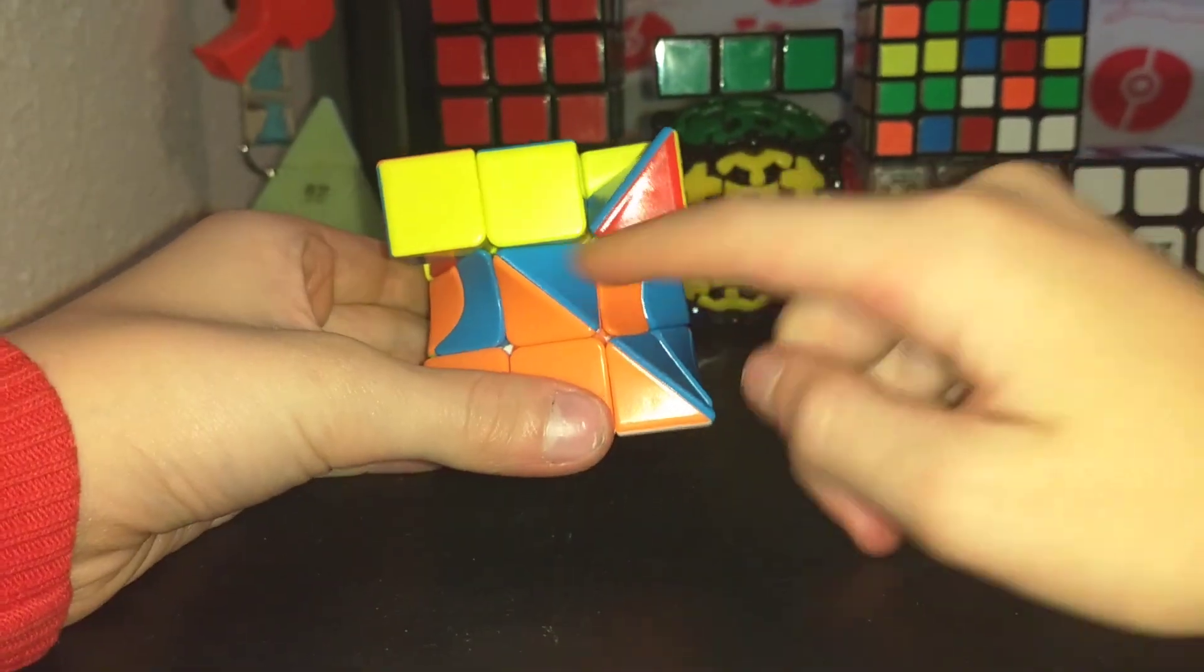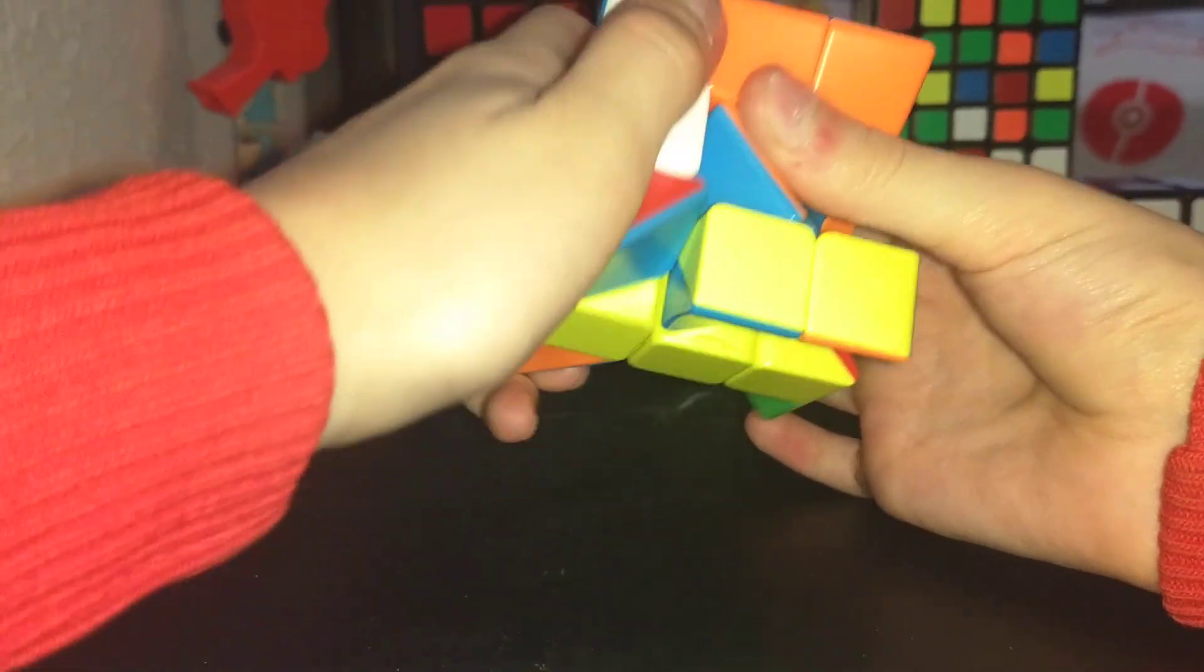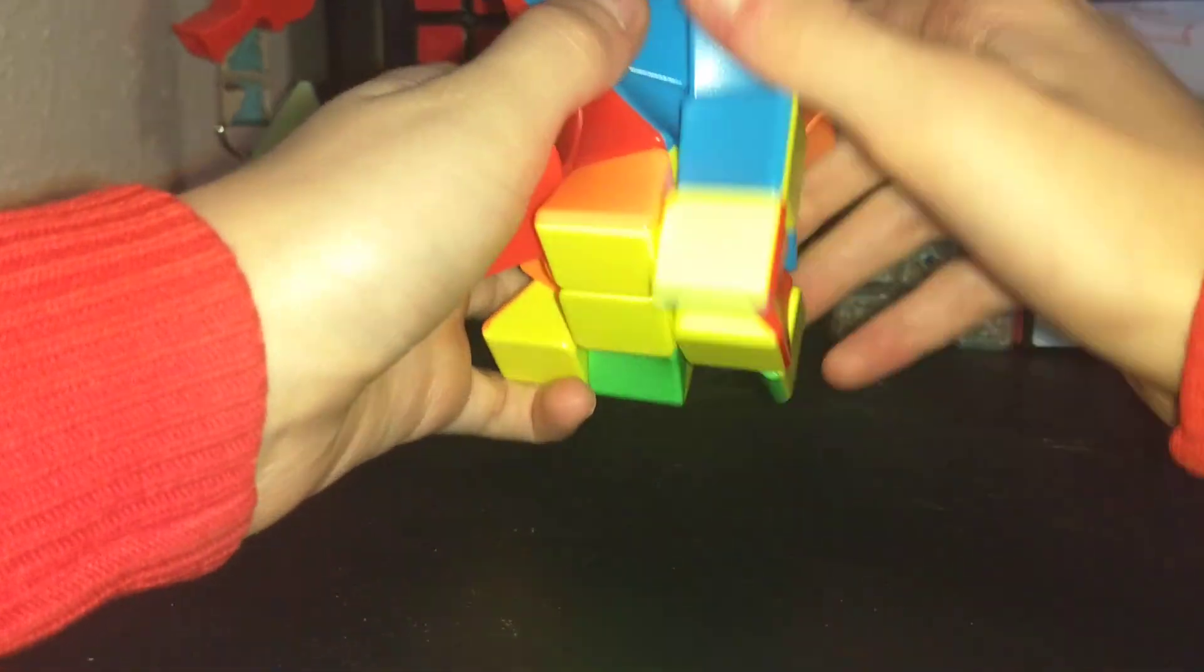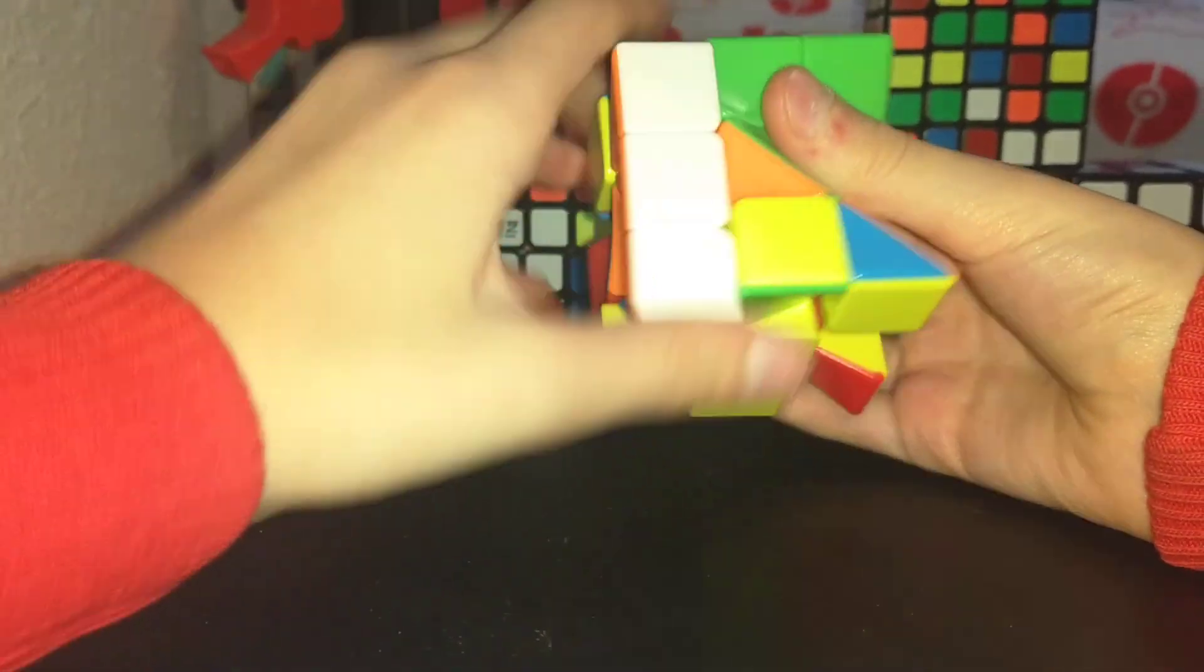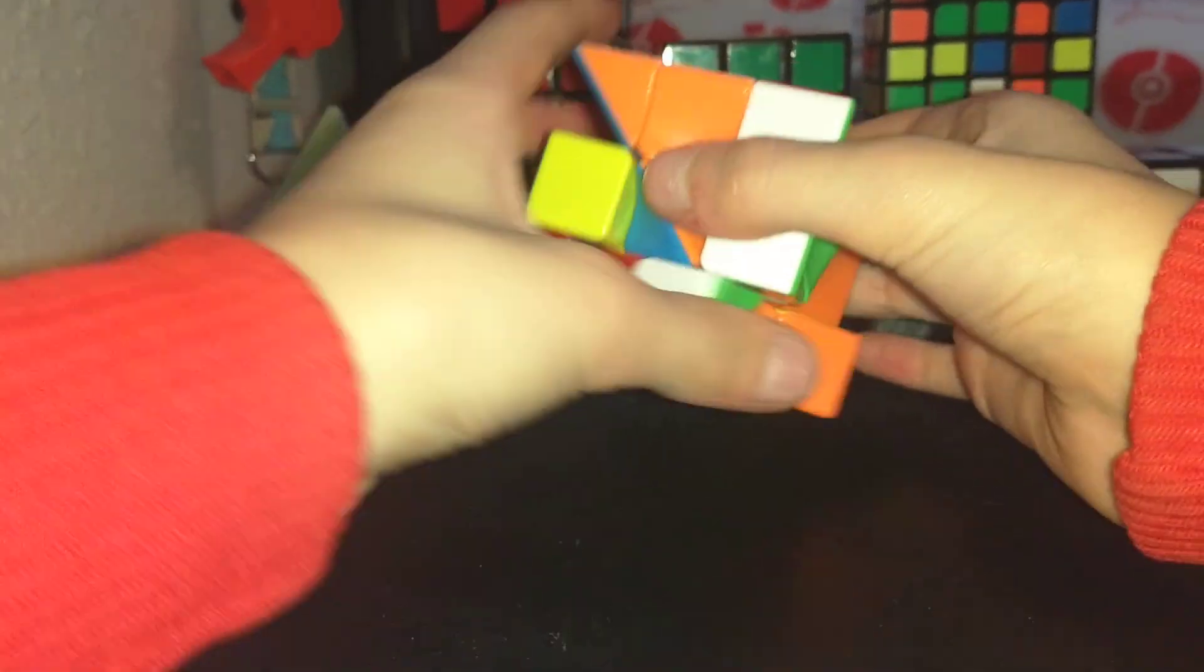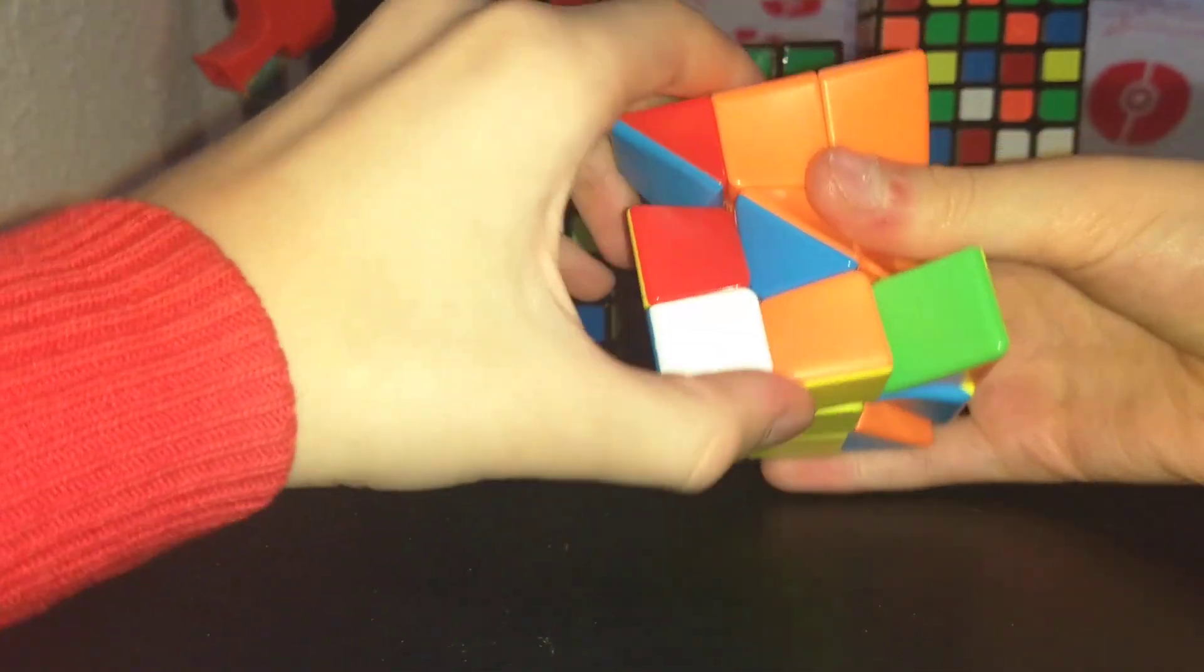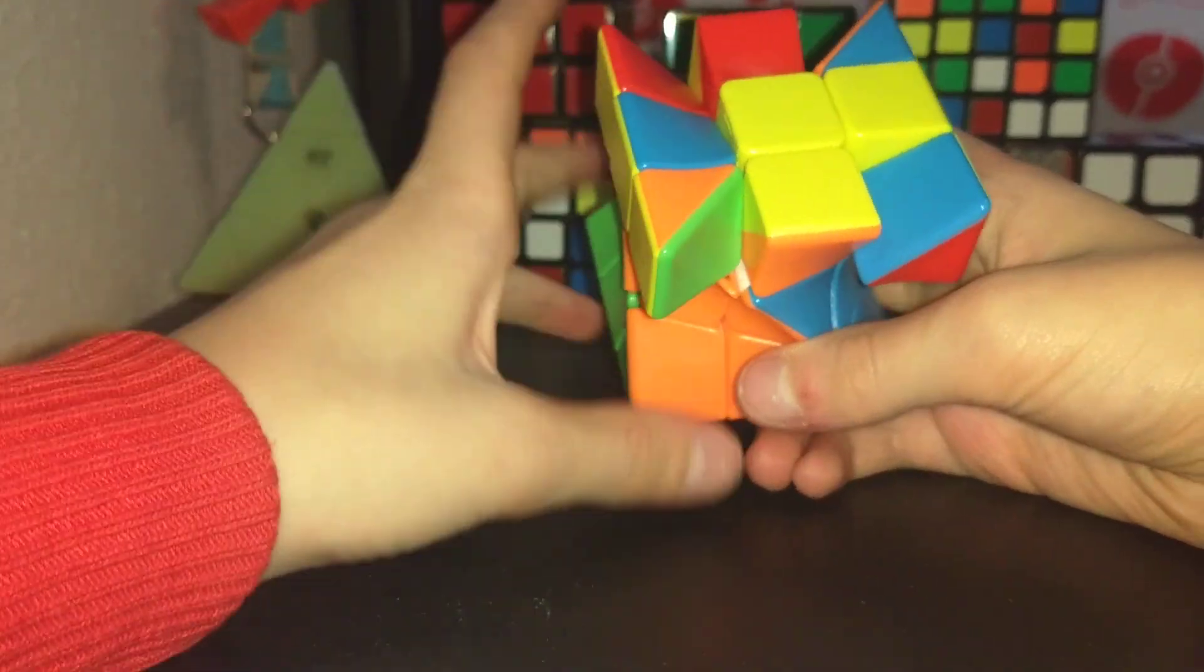And then you'll have these two that are swapped. You just want to take one of them out, how you would take one out in the beginner's method. You just take one of them out. And then you'll find that one, which is right there, and you'll put it in where it needs to go. And then you'll find the other one and put that one where it needs to go. And as you can see, it has solved the case and it is now done.